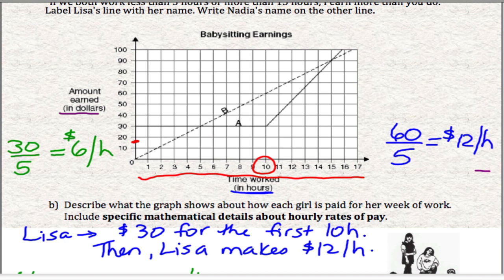So 10 hours, she makes $4 an hour. 10 hours, that would be $40. Okay, but then she also makes the $15 flat fee. So that would be $55.